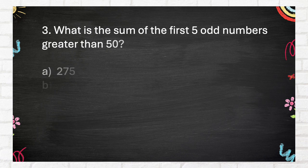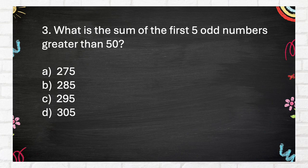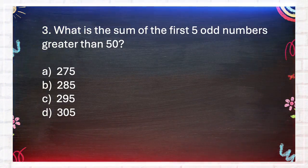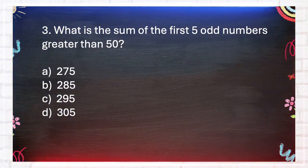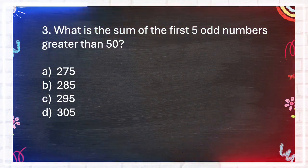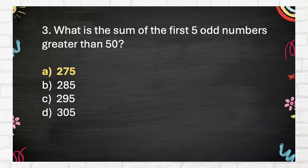Question number 3. What is the sum of the first 5 odd numbers greater than 50? A. 275, B. 285, C. 295, D. 305. The answer is A. 275.